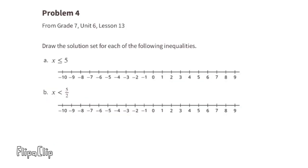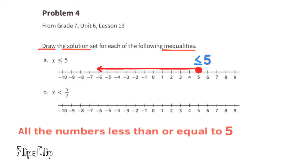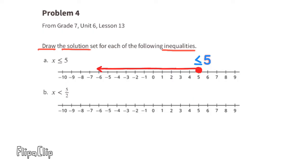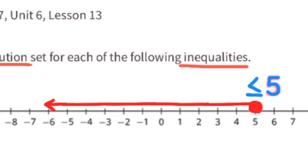Problem number four from 7th grade Unit 6 Lesson 13. Draw the solution set for each of the following inequalities. Part A: x is less than or equal to 5. Since it says less than or equal to, we bubble in the circle at 5 to represent equal to. Then the arrow on the number line points to the left to represent all numbers less than or equal to 5. The inequality sign points to the left, which tells you the arrow also points left.